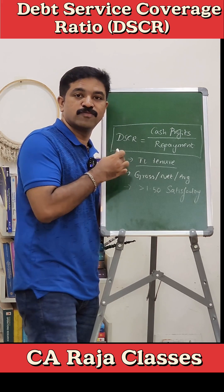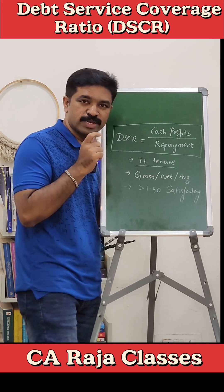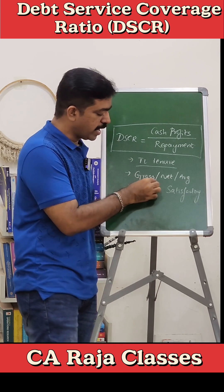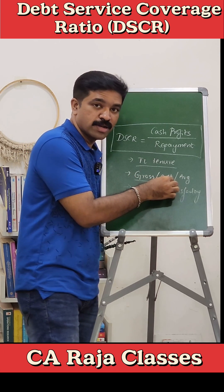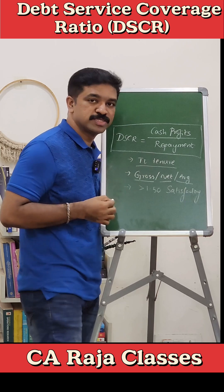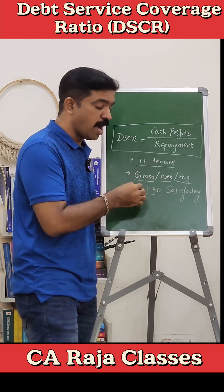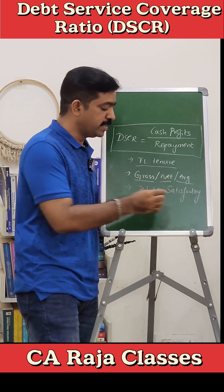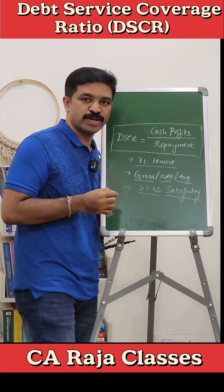If the tenure is for eight years, then for all eight years we have to calculate and see what the DSCR is going to be. We should also calculate gross DSCR, net DSCR, and average DSCR. If the DSCR is above 1.5, then it is considered satisfactory.